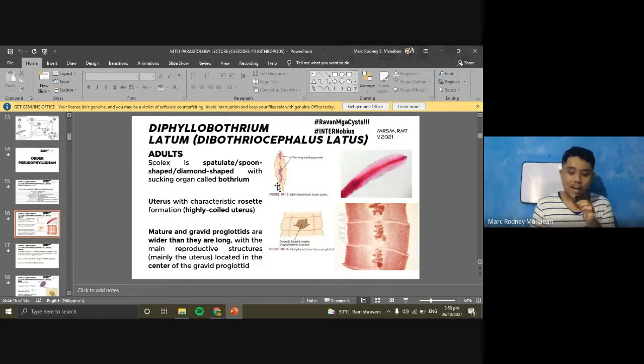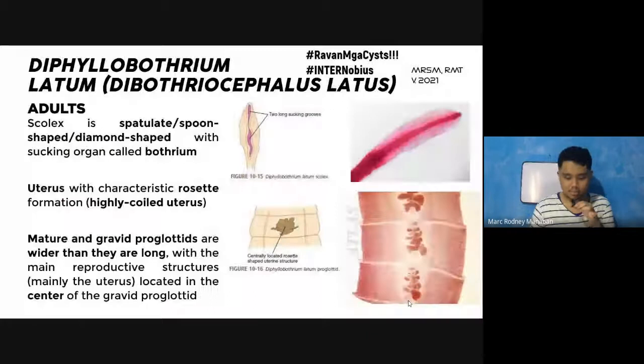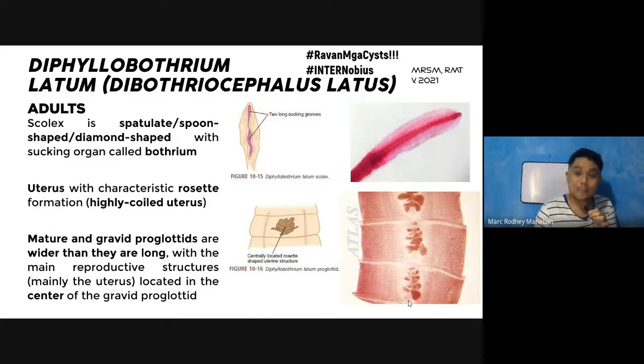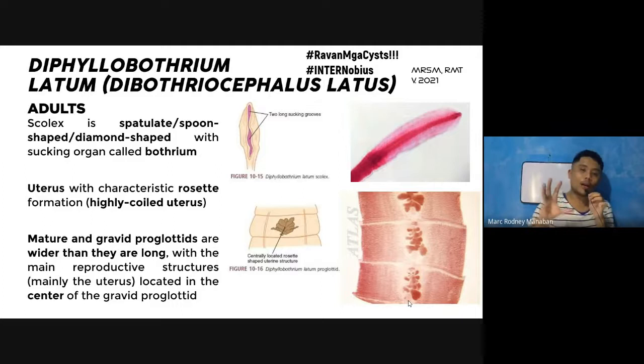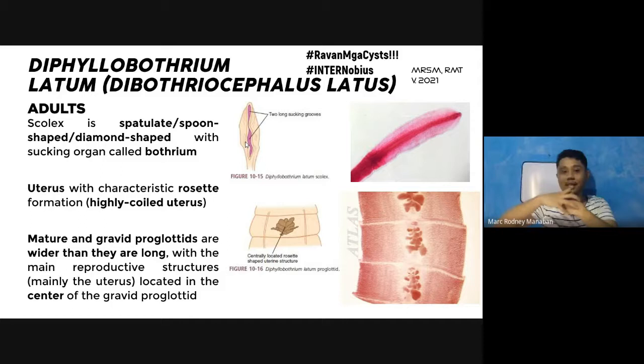The mature and gravid proglotids are wider than long — that's why the common name is 'broad' tapeworm. The uterus, visible in the center of the proglotid, resembles a rosette — highly coiled, rosette-shaped. D. latum adults can be confused with Spirometra species. D. latum adults can reach more than 10 meters in length with 3,000 proglotids.